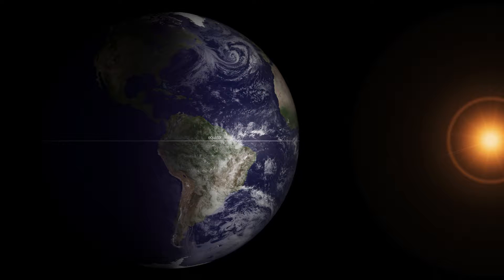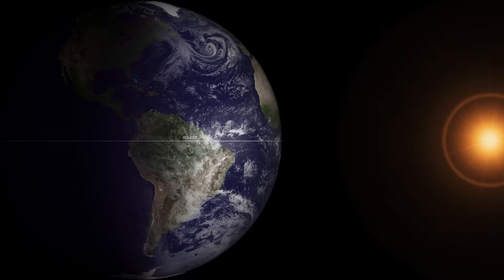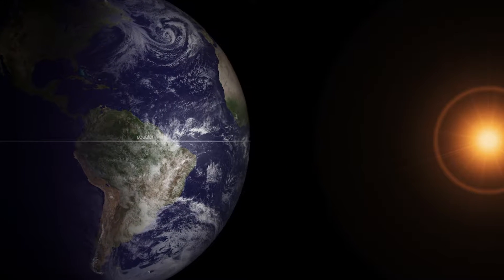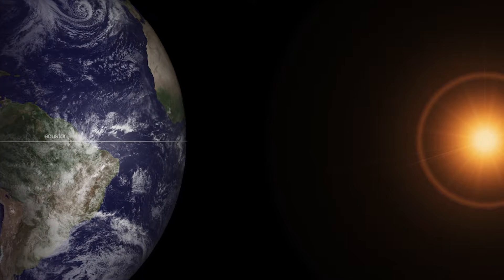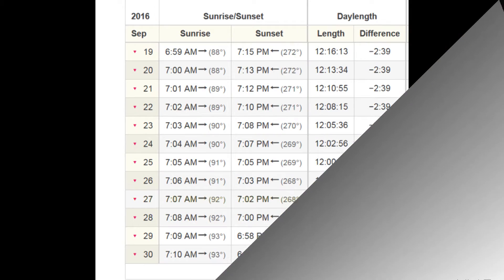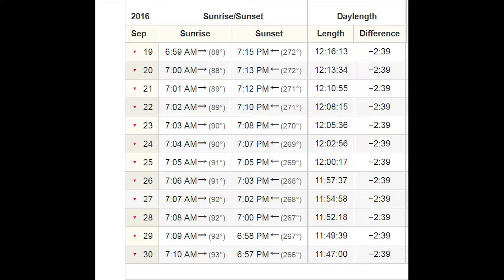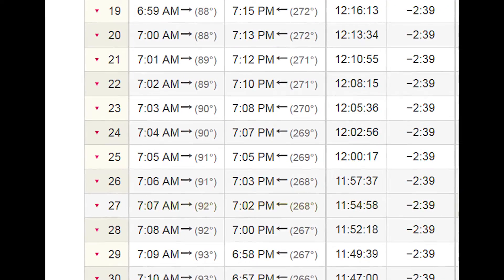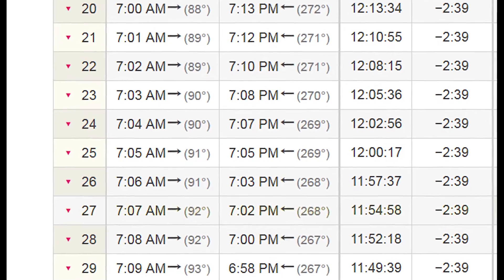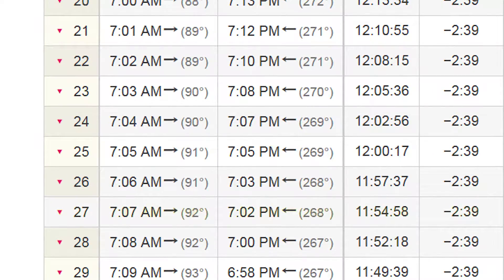Now, to one misconception. The word equinox means equal night in Latin, the idea being that on the equinoxes, the 24-hour day is exactly split between daylight and darkness. But the sunrise-sunset table for this month in central Pennsylvania shows that's not the case. The sun rose and set 12 hours apart this year on September 25th, three days after the equinox.